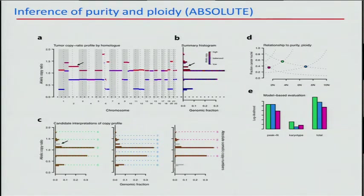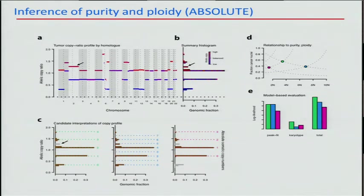The challenge is to take this as input and understand what the mapping is of these discrete-seeming levels in the data to actual integer allelic copy numbers. There are three distinct solutions that are essentially mappings of those peaks in the data to integer allelic copy estimates. On the top right of the slide, you can see that each of those three solutions corresponds to a different combination of tumor purity and ploidy.